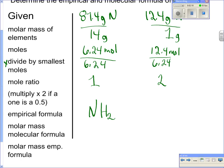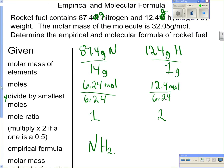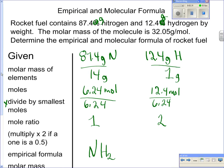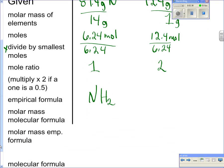So the empirical formula is the lowest whole number ratio, but it may be some multiple of that for the actual formula, in this case rocket fuel. And so what we do is we look for the molar mass of the molecular formula, and the problem gave that to me right here. It says the molar mass of the molecule is 32.05 grams. They have to give you that, or you won't be doing this next step.